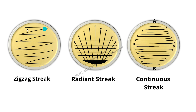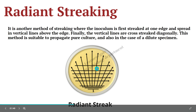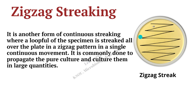In zigzag streaking you have pointed edges while you streak. In radiant streaking you first streak parallel lines of the inoculum, then at the last line — the fourth or fifth line — you start radiating the inoculum. Once you are done with radiating, you will radiate both vertically as well as horizontally. Both vertical and horizontal lines then cross-streak diagonally in order to reduce the inoculum load. Zigzag streaking is a continuous type of streaking with pointed edges, where the zigzag pattern is followed in order to streak the pure culture.